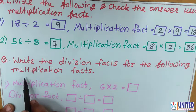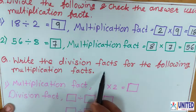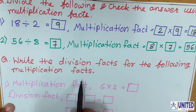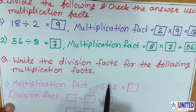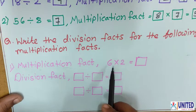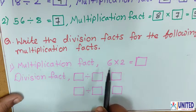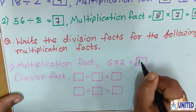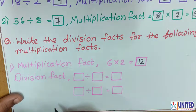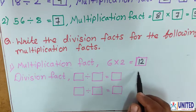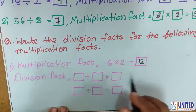Now let us see question number 2: Write the division fact for the following multiplication facts. Here a multiplication fact is given and you have to write down the division fact. What is given? 6 multiplied by 2 — that means 6 twos are — what is the answer? 12.